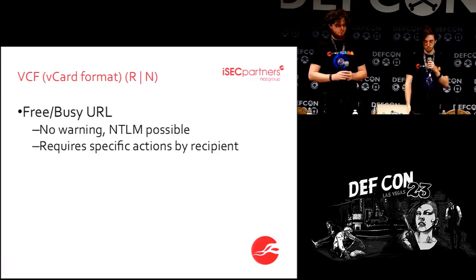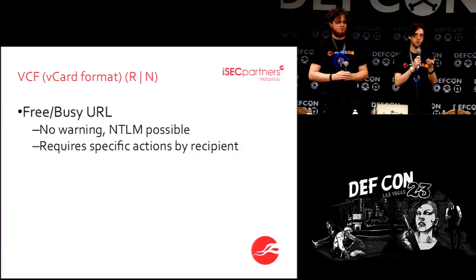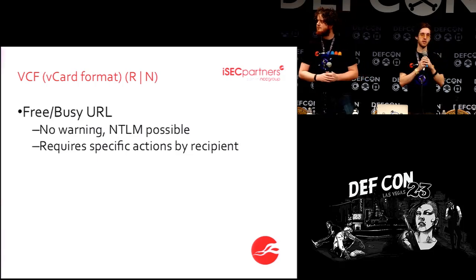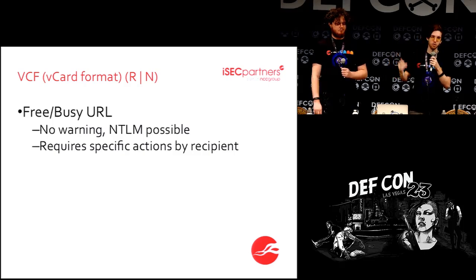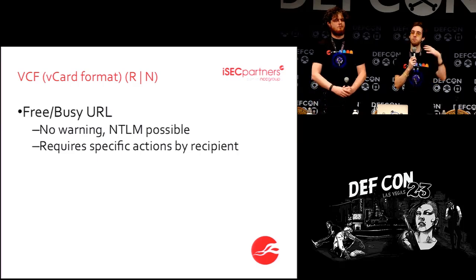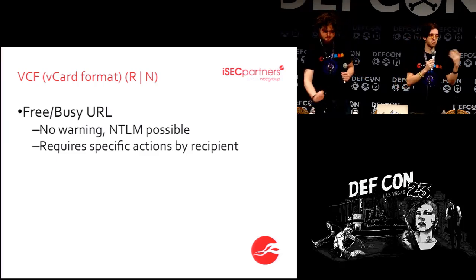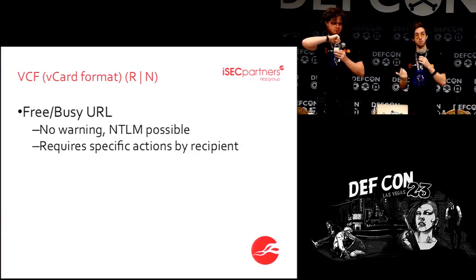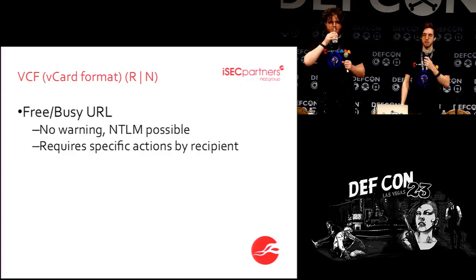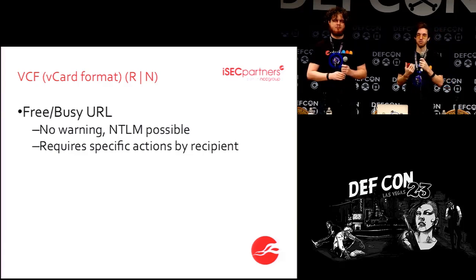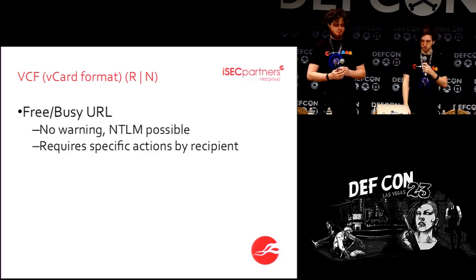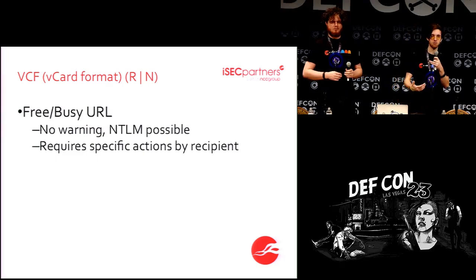Next we have the vCard format — a virtual contact card where you send somebody the virtual equivalent of a business card with your picture, email, phone number, and full name. One interesting feature is a free-busy URL: a URL your calendar user agent can check to see when a person is free or busy. Normally this is an HTTP URL, but you can use a UNC path. This does require specific actions — you would need to receive my contact card, import it, and then check when I'm free or busy. But for anyone who's done social engineering, this is not necessarily a hard scenario to set up.